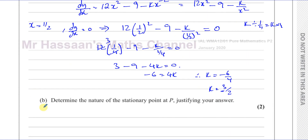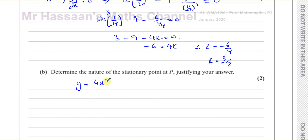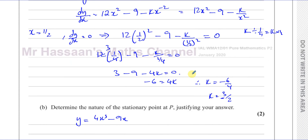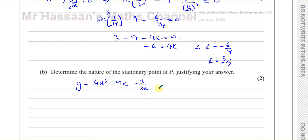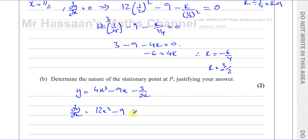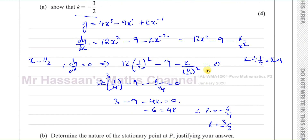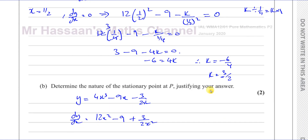Let's write the whole equation now that we know k. So y equals 4x cubed minus 9x minus 3 over 2x. And dy/dx, as we determined earlier, is 12x squared minus 9. Then we have minus k over x squared — since k is minus 3 over 2, it becomes minus, minus 3 over 2, which gives plus 3 over 2x squared. So dy/dx equals 12x squared minus 9 plus 3 over 2x squared.